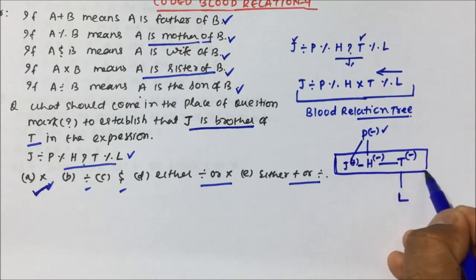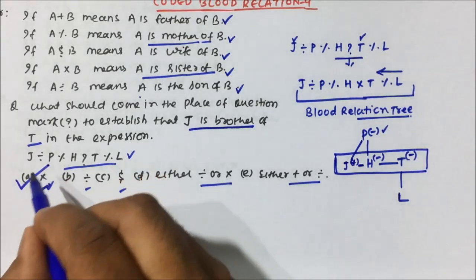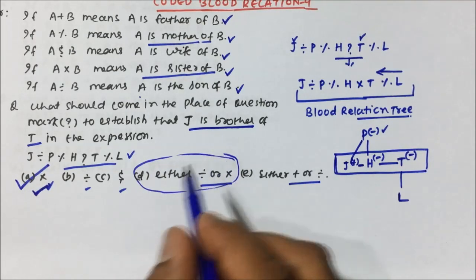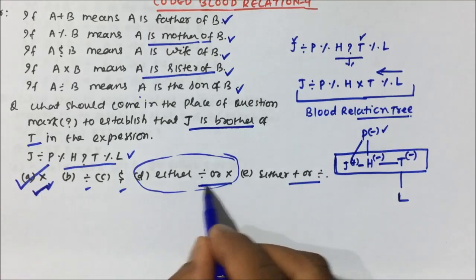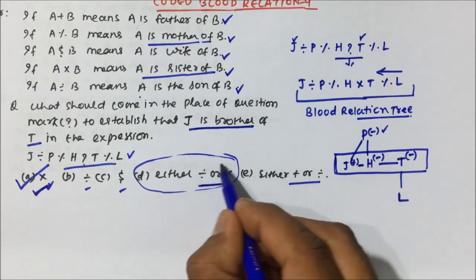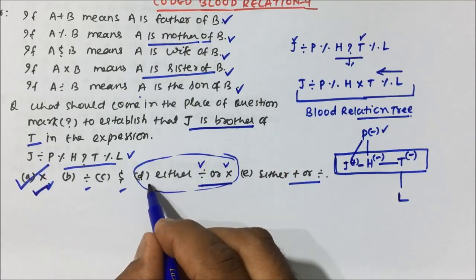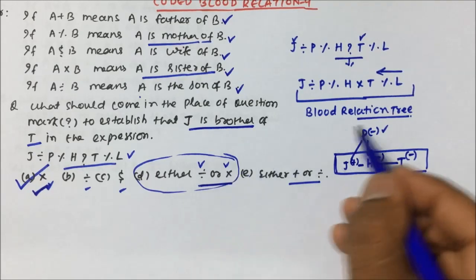If you see what has been asked — J is brother of T — looking at the tree, J is indeed brother of T, which makes Option A correct. But wait — there may also be Option D, which says either division or multiplication. So let's place division and check.